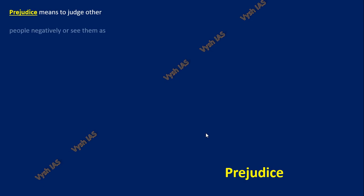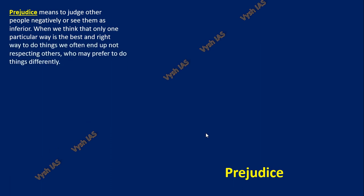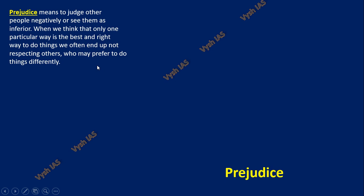One is prejudice and one is stereotypes — we will discuss both. Prejudice means to judge other people negatively or see them as inferior. When we think that only one particular way is the best and right way to do things, we often end up not respecting others who prefer to do things differently. Take your own example: you are preparing for UPSC when all your friends are in comfortable engineering or medical jobs, and you alone chose a separate path. Your relatives will have prejudice against you — this person is doing something different, he's not following the right path, he has no salary. They don't know you are doing something more useful, but this prejudice mindset starts building up.